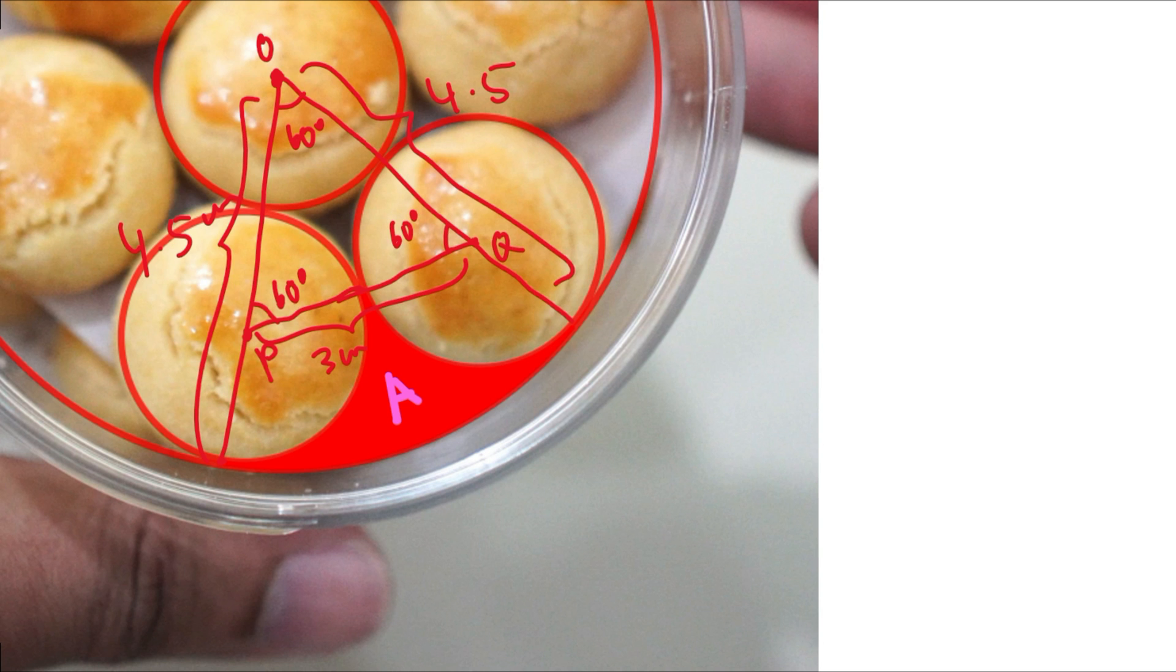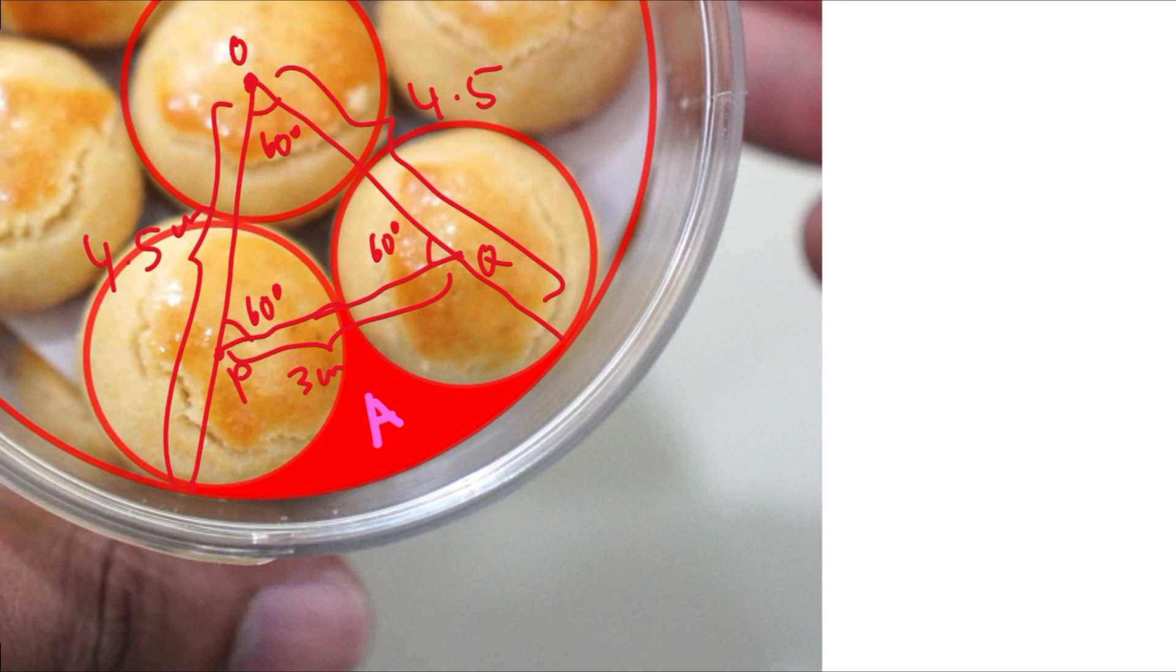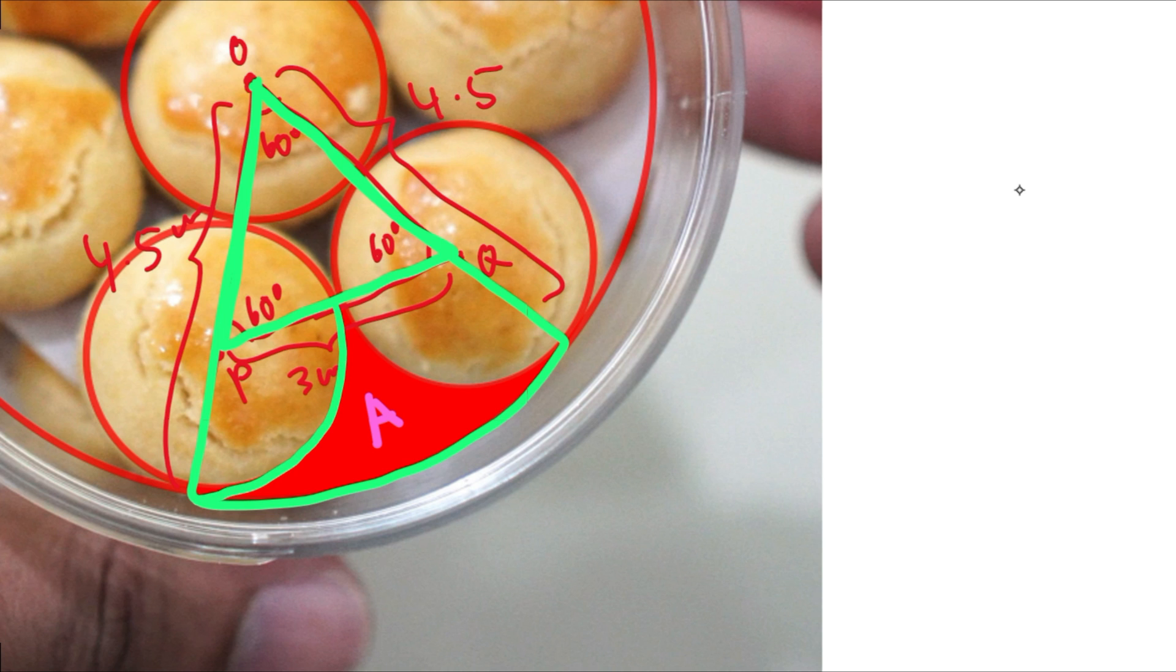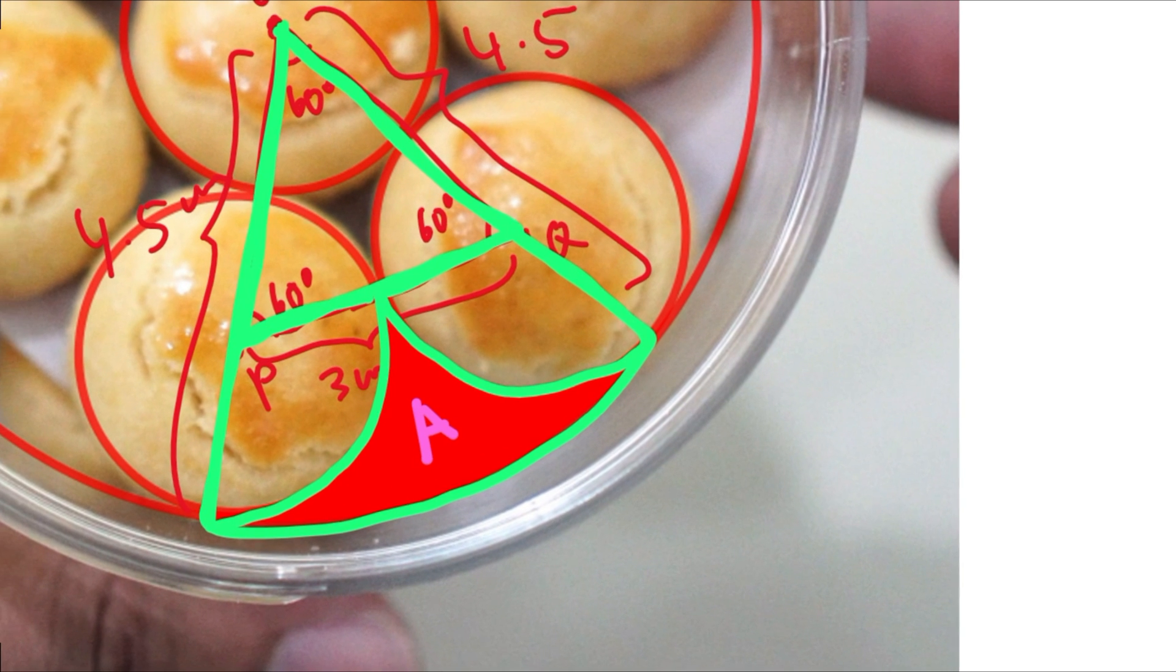So what we can do here is we take the area of this sector, the large sector that is part of the container, the circular container. Then what we can do is we can subtract the area of the triangle. And we can subtract the area of these two sectors here, this sector and this sector. Once again, these sectors are identical.